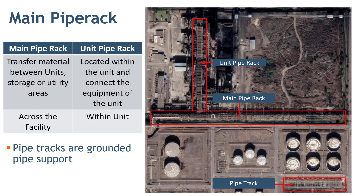Pipe racks are also classified as main pipe rack and unit pipe rack. Main pipe racks help transfer material between units, storage, and utility areas. They connect multiple units and run across the facility. Here in the slide, in the photograph, you can see that I have highlighted both the unit pipe rack and main pipe rack, as well as the pipe track shown at the bottom.